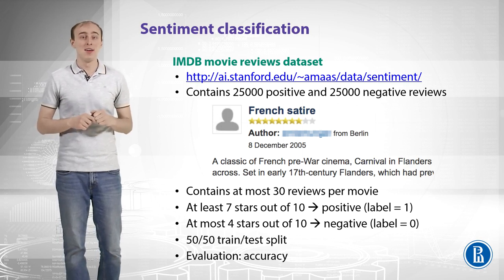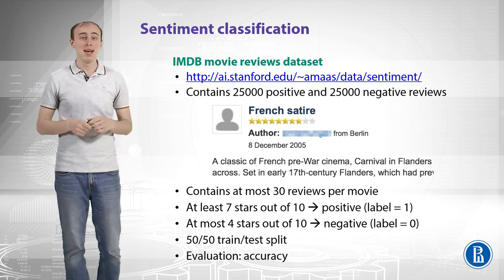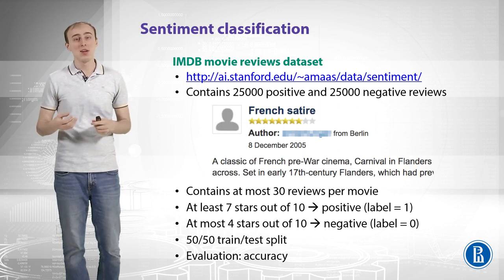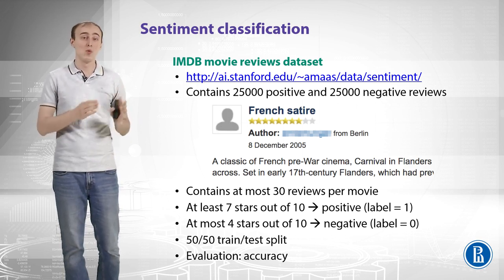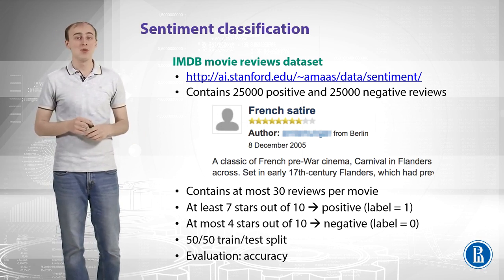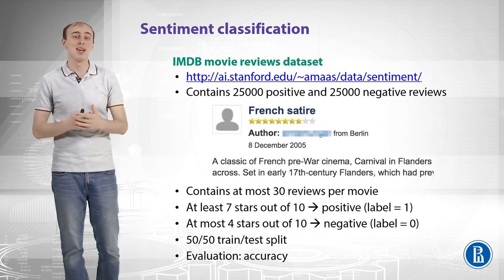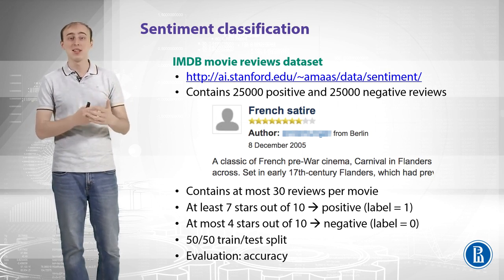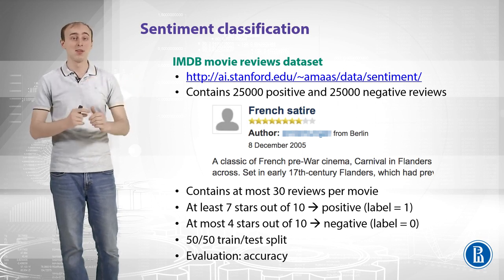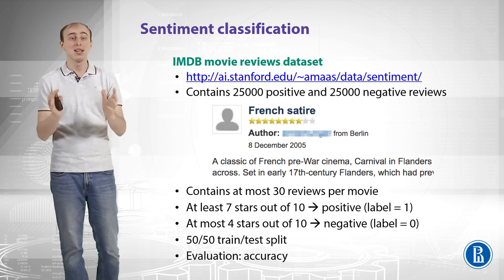How did that dataset appear? You can look at the IMDB website and see that people write reviews there and also provide a number of stars, from 1 star to 10 stars. They rate the movie and write the review. If you take all those reviews from the IMDB website, you can use that as a dataset for text classification, because you have a text and a number of stars, and you can think of stars as sentiment.